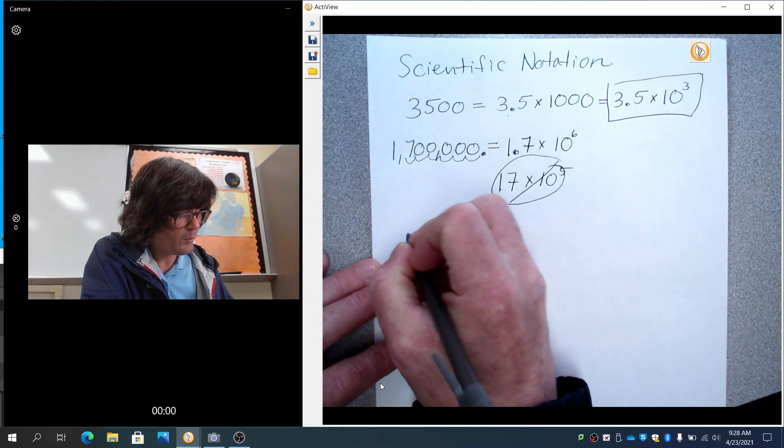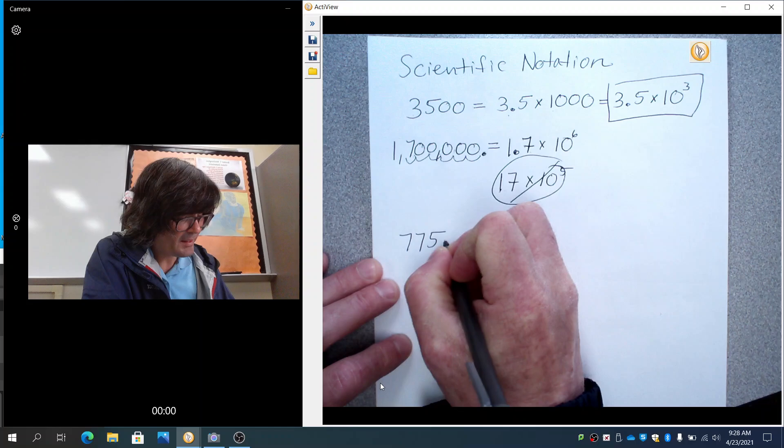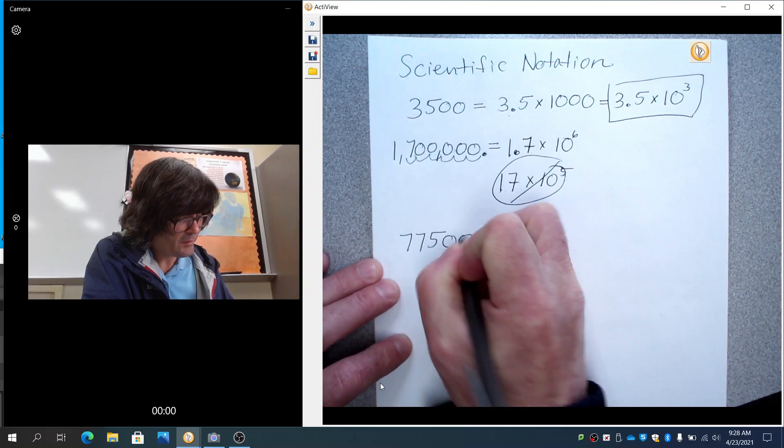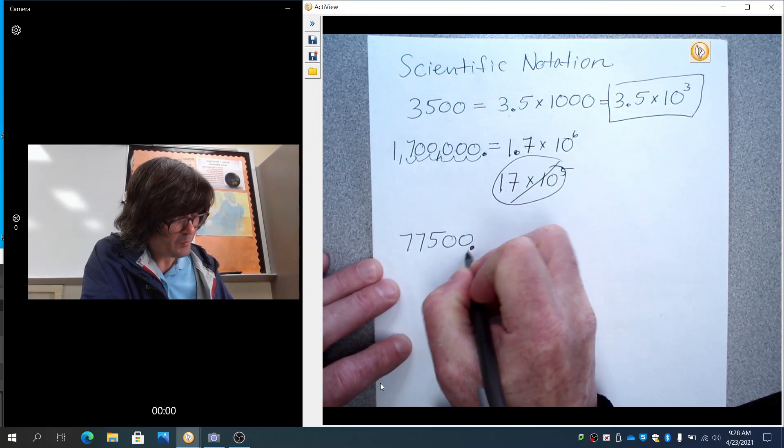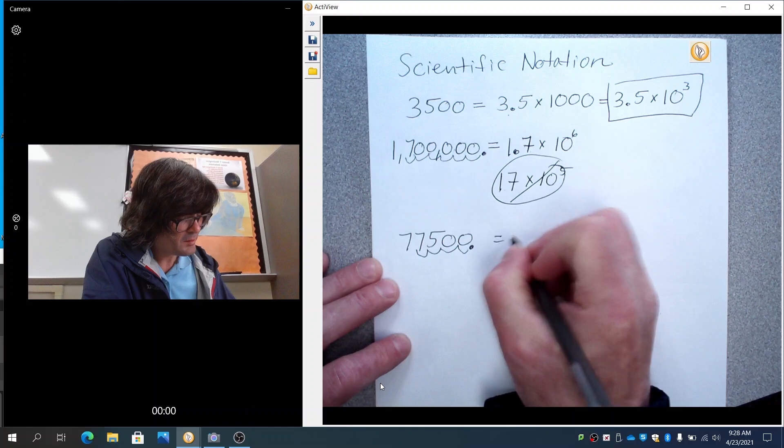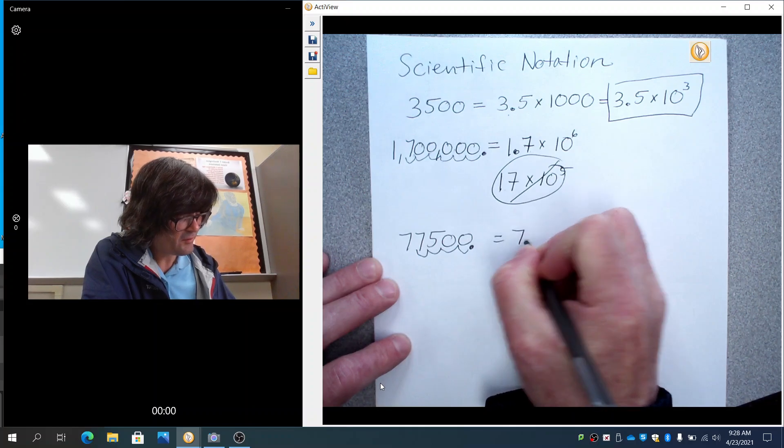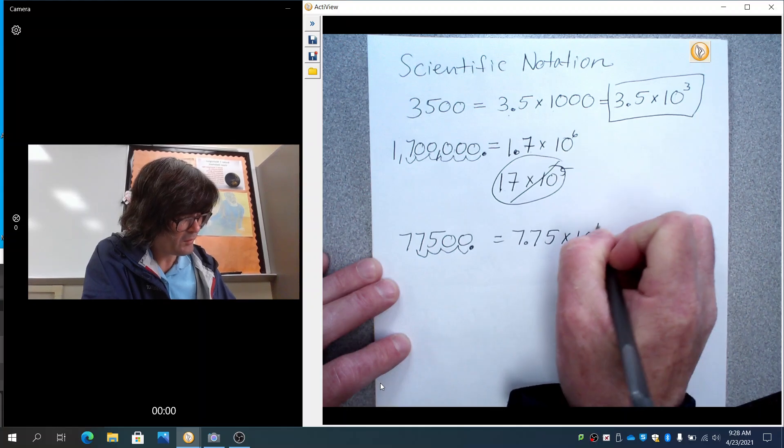Maybe just try one more, 77,500. Here the decimal would move over 1, 2, 3, 4 spots. So this is 7.75 times 10 to the fourth.